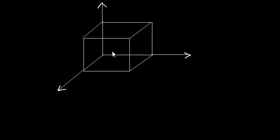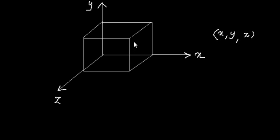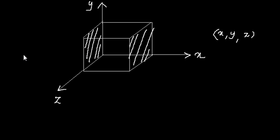If you have a cube with x, y, and z axes, you can define any point in the cube with these three coordinate values. You can move any plane of the cube to infinity — that is the case with all six sides. You can move these planes to infinity, which gives you the freedom to define any point in space with an infinite number of choices.